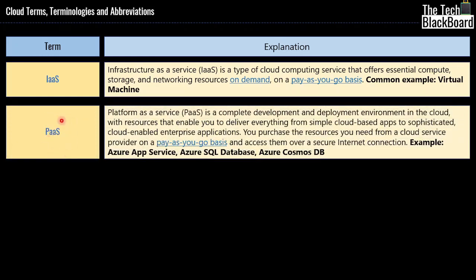Coming to PaaS, or Platform as a Service — PaaS is a complete development or deployment environment in the cloud with resources that enable you to deliver your application regardless of complexity. Comparing PaaS with IaaS: in IaaS, you normally provision a virtual machine with a suitable operating system and then put other software tools on top for development. However, in PaaS, the entire environment is pre-configured — just use it and start developing your dream application. Some commonly used PaaS services in Azure are Azure App Service, Azure SQL Database, and Azure Cosmos DB.